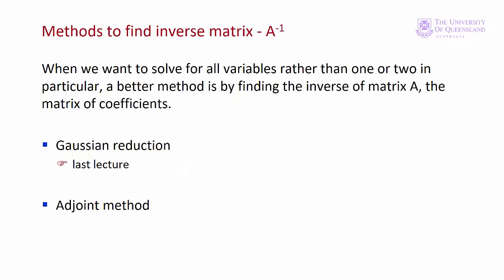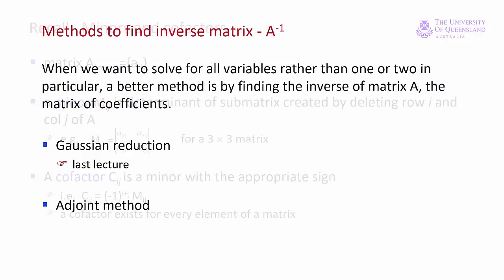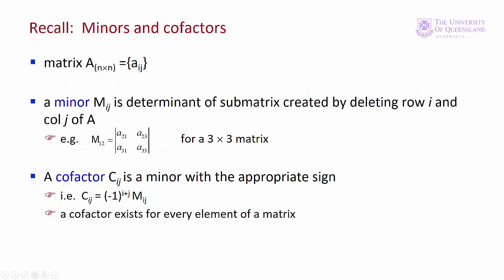As we saw in lecture 11, we can solve a system of equations by finding the inverse of a matrix. There, we found the inverse using Gaussian reduction. Here we'll look at another method. Before we do that, let's refresh our memory on some definitions. If we have a square matrix A, a minor results from eliminating a row and a column centered on a particular element of the matrix. The minor is the determinant of the remaining sub-matrix. Remember also that a determinant is a scalar. If we give the minor the appropriate sign, we get the cofactor.